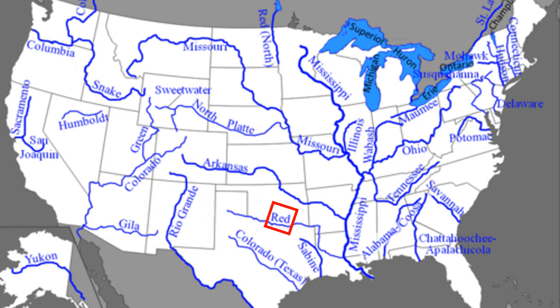If you live in the southern United States around Texas and Oklahoma, you may think about the Red River that drains into the Mississippi River. While this is undoubtedly a great river, it is not the one we are going to be looking at in this presentation. Rather, we are going to be looking at the Red River of the North, which runs through the eastern Great Plains and into Canada.